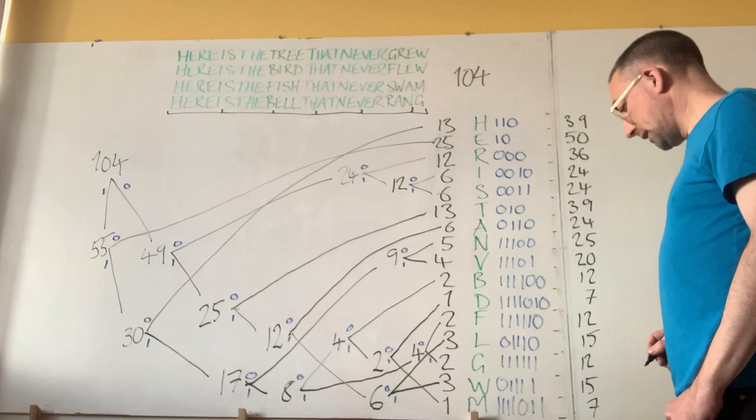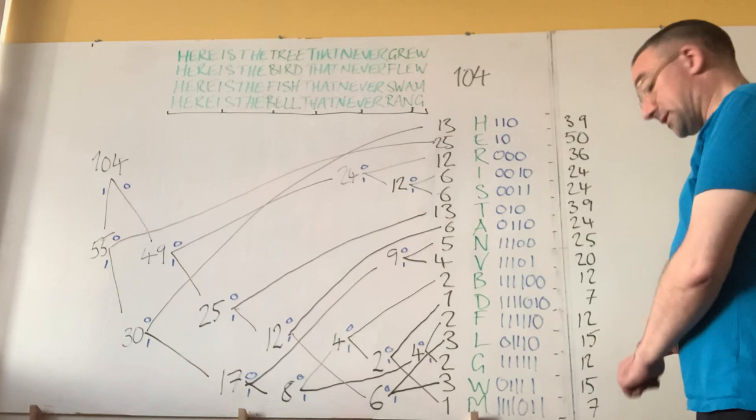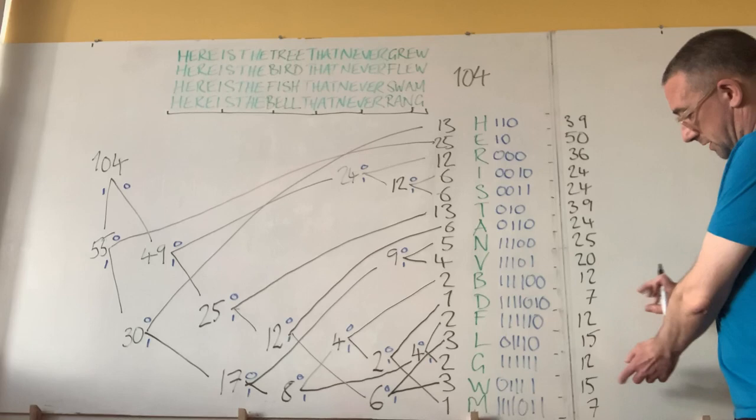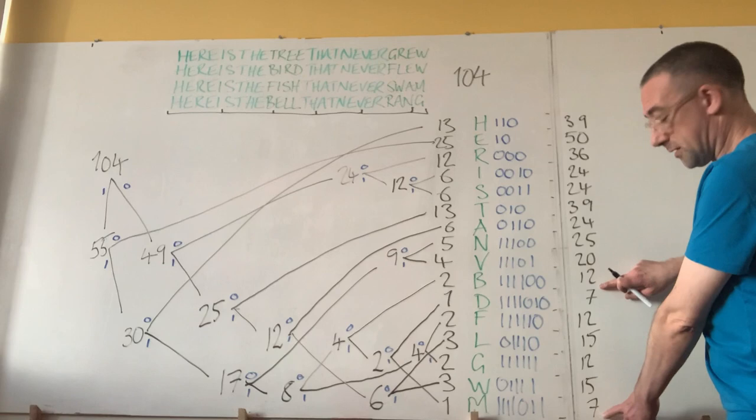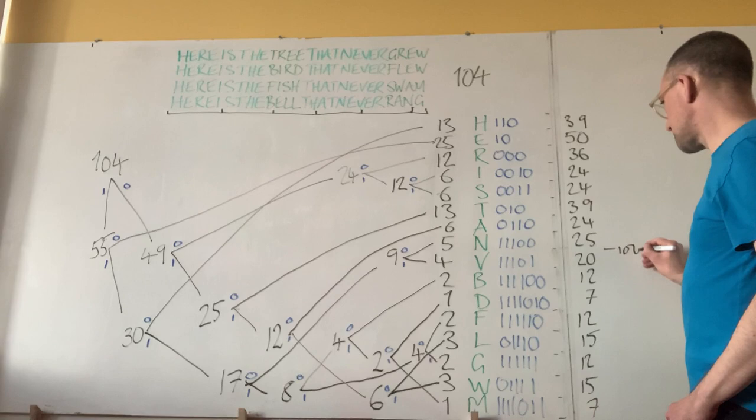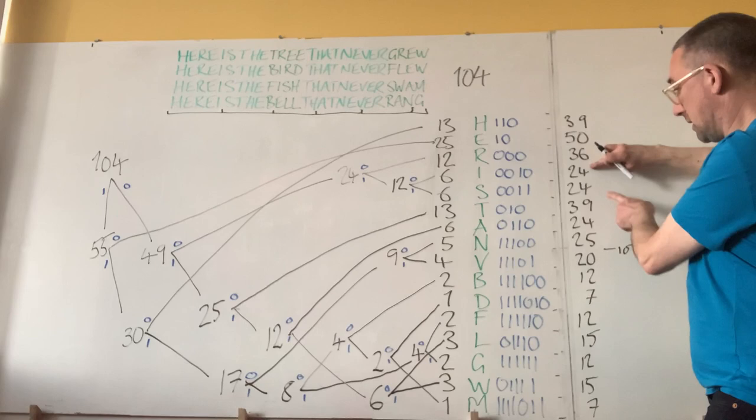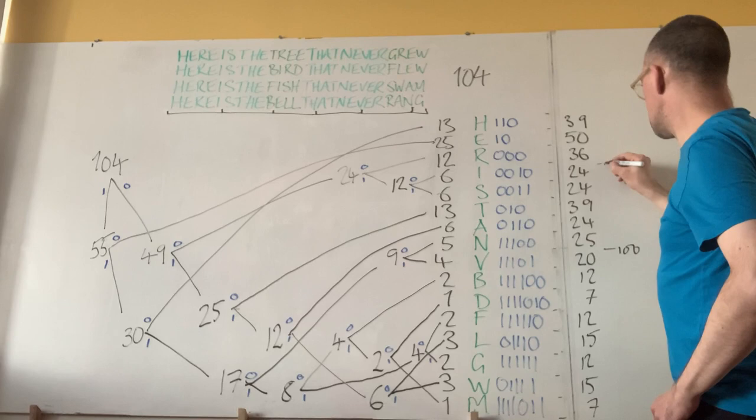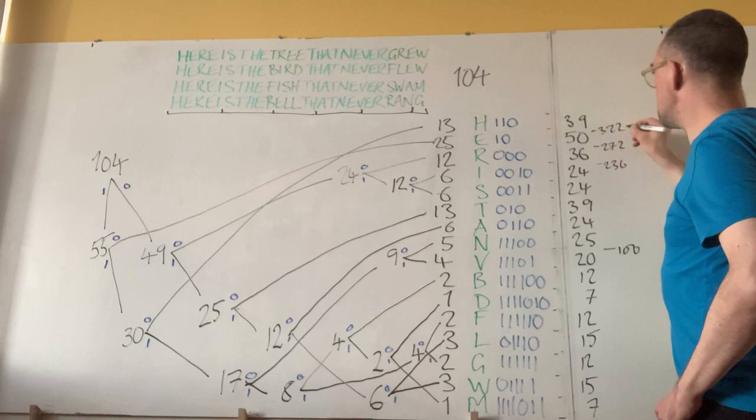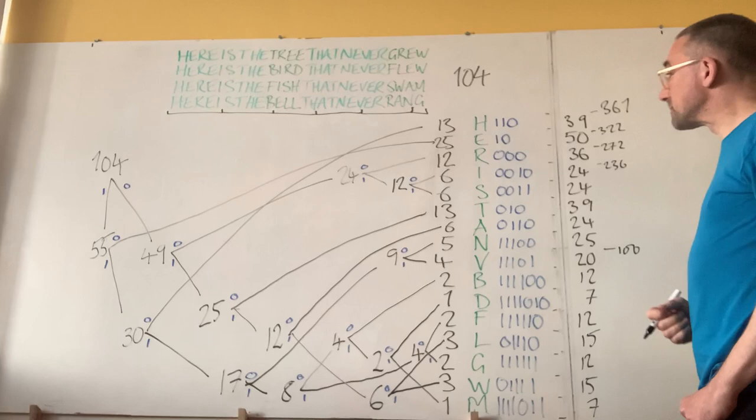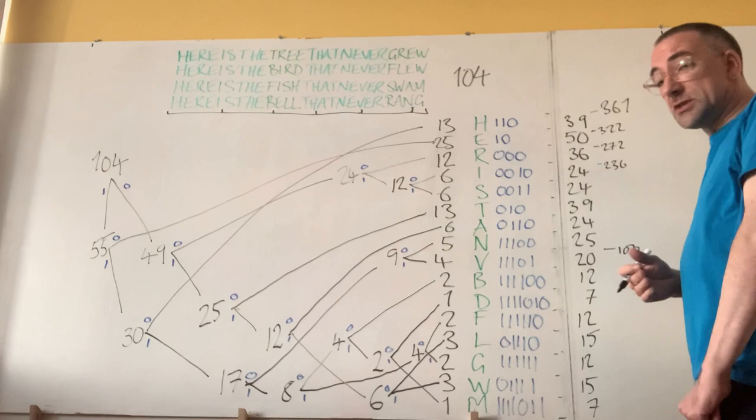So let's just add this lot up, and it's easy to get that wrong, which is why rehearsal is extremely useful. Here we've got 2 lumps of 27, making 54, and another 14, making 68. 12 takes us to 80, and 20 to 100. Then we've got 4 things that are almost 25, missing 3, and 39, making 136. So we're on 236, 272, 322, 361. So if we've done our sums right, we have used 361 bits to encode this message, which is rather better than 416.